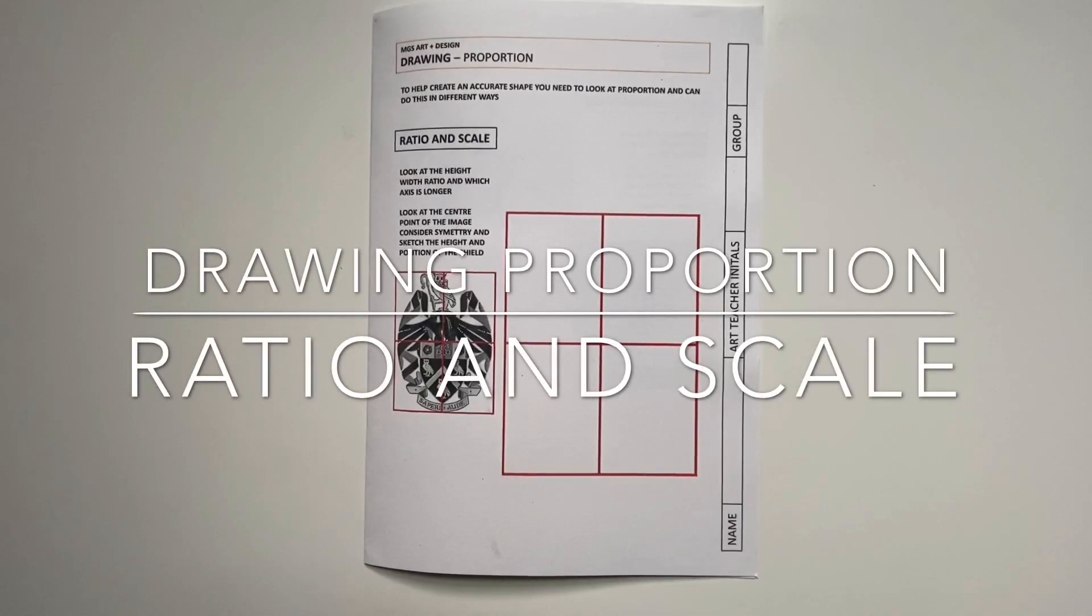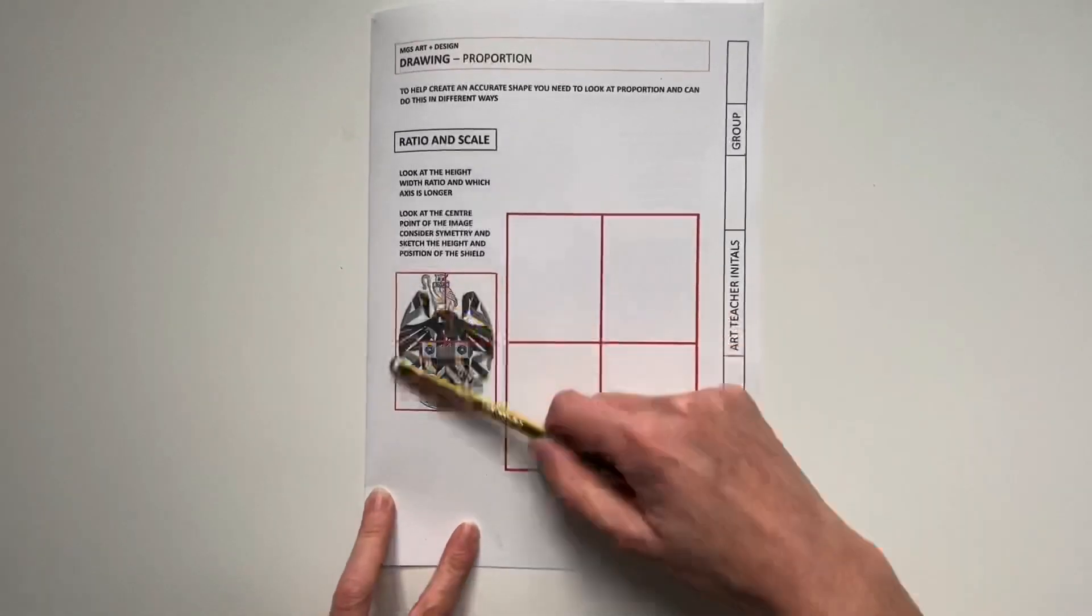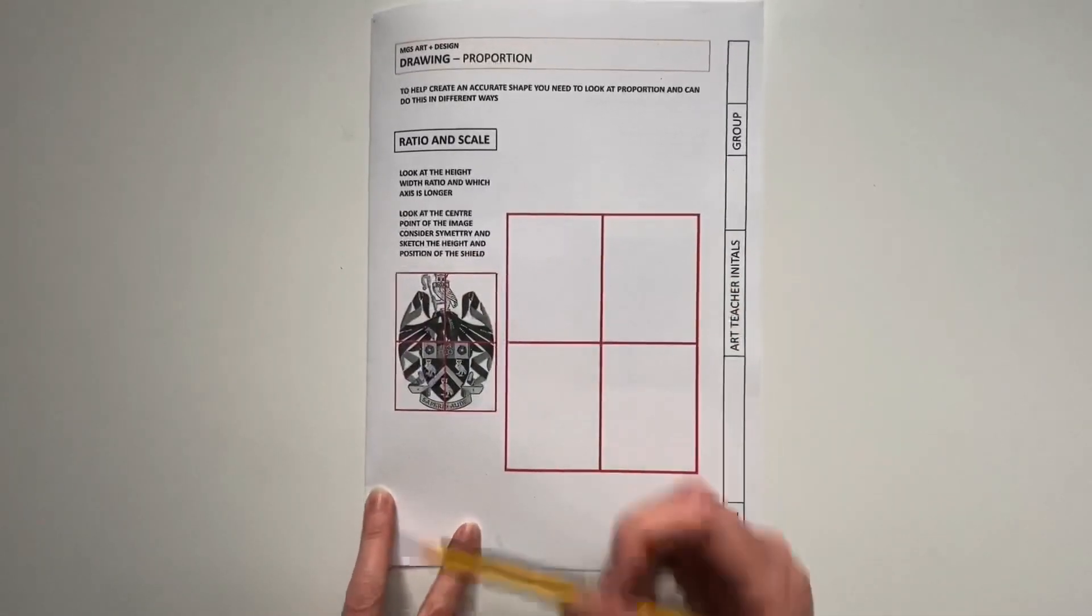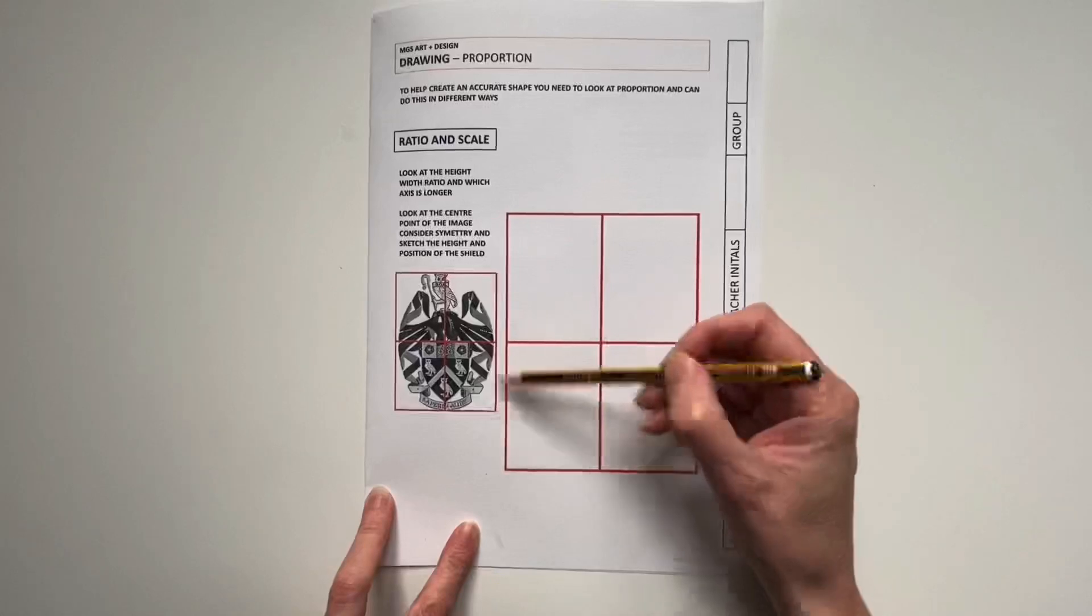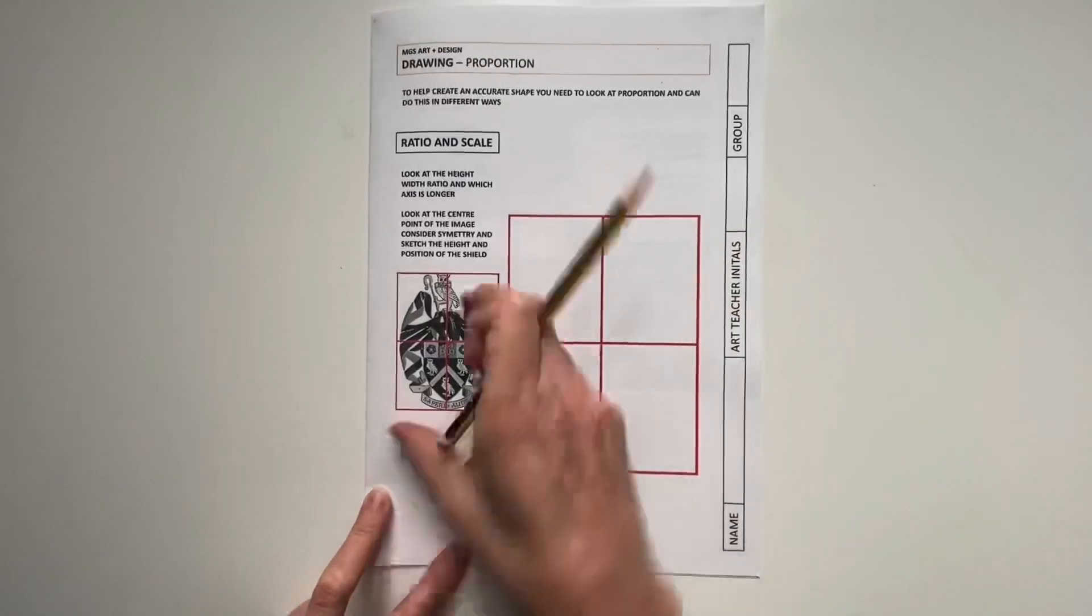I'm going to be looking at proportion through a series of different exercises. In the front cover of this booklet, you can see I have taken a school badge. You might describe this as an oval shape—that's absolutely fine—but you can draw a frame over the top of it at a 90-degree angle to create the ratio of the height and width.